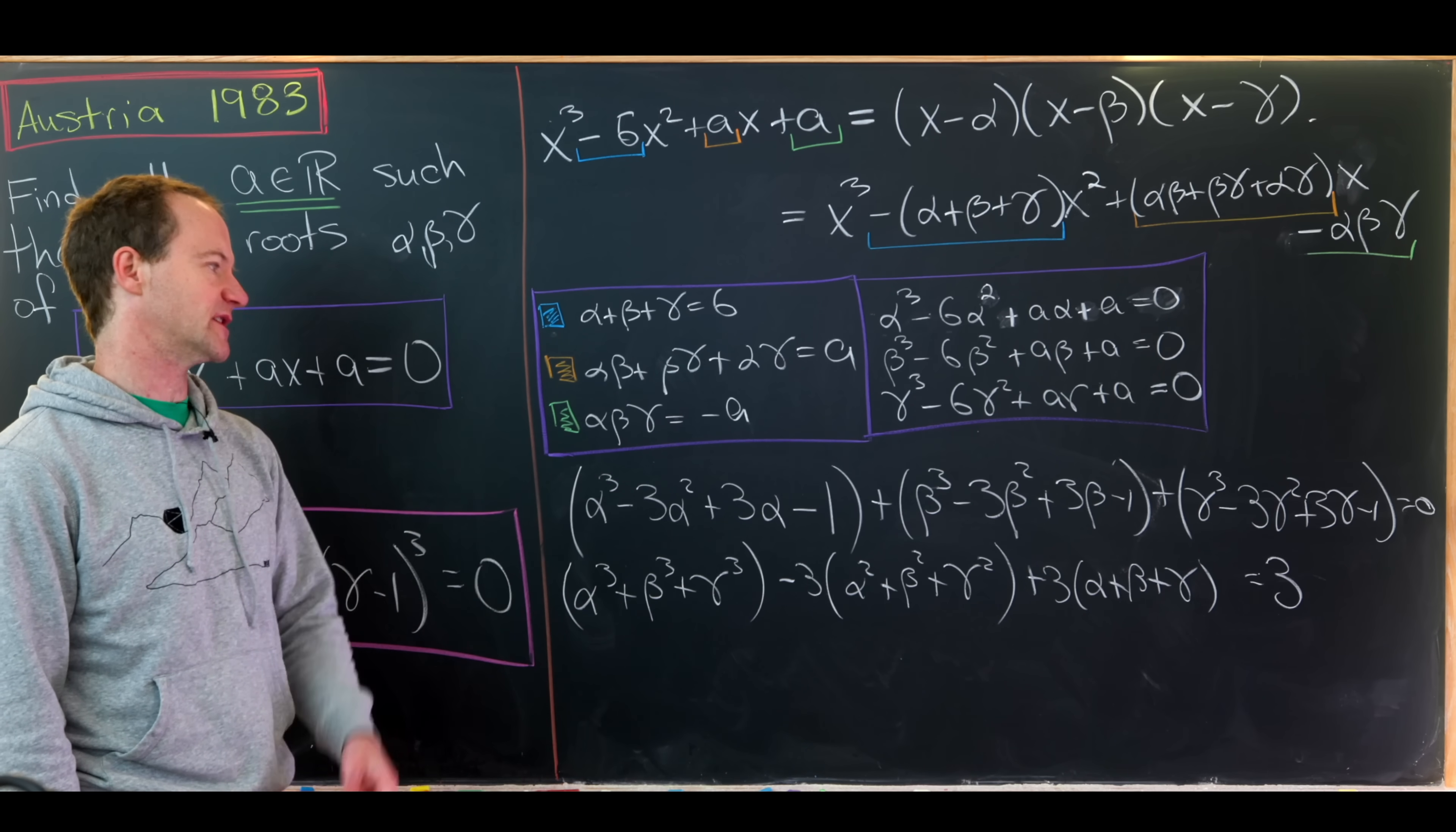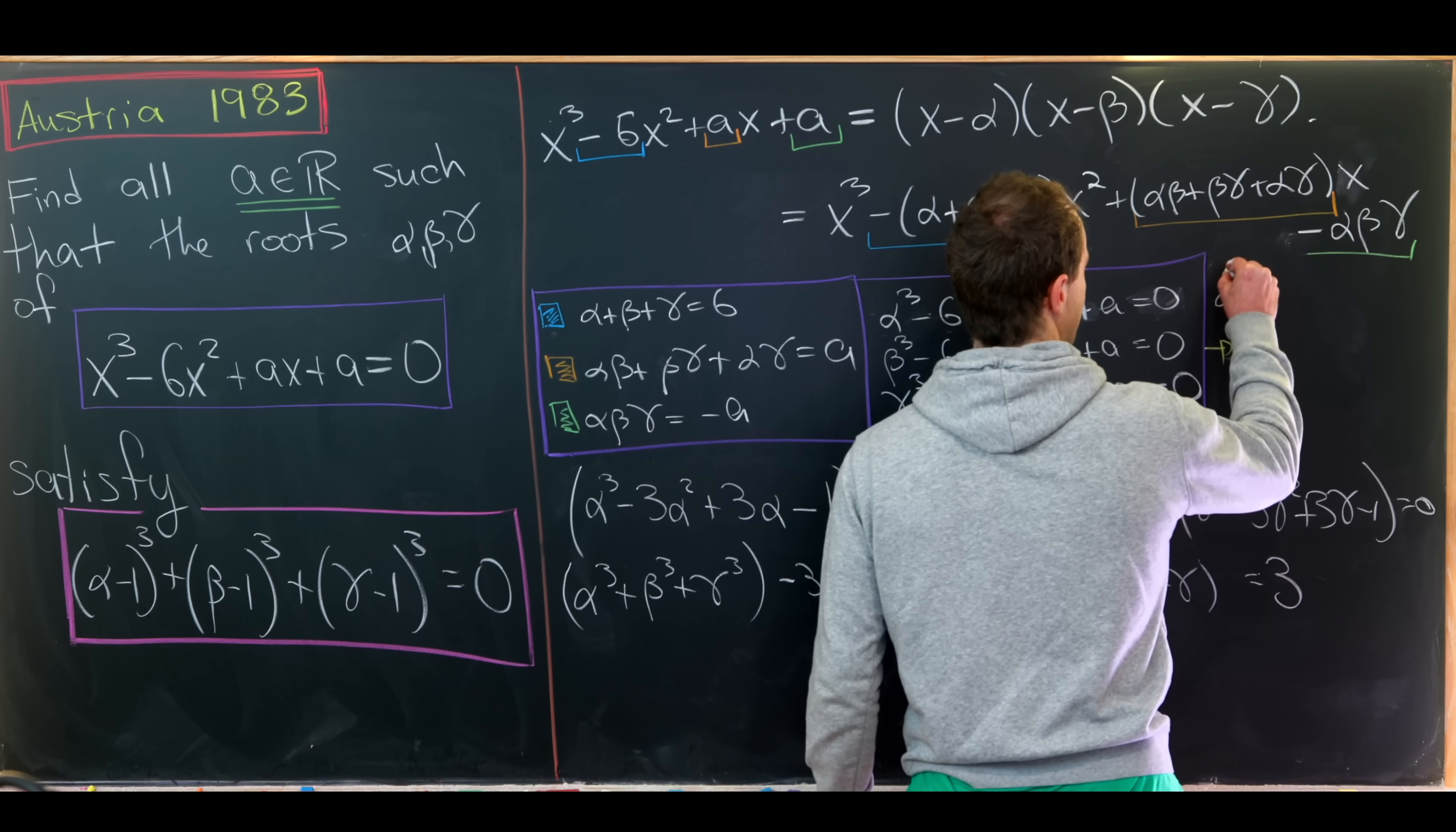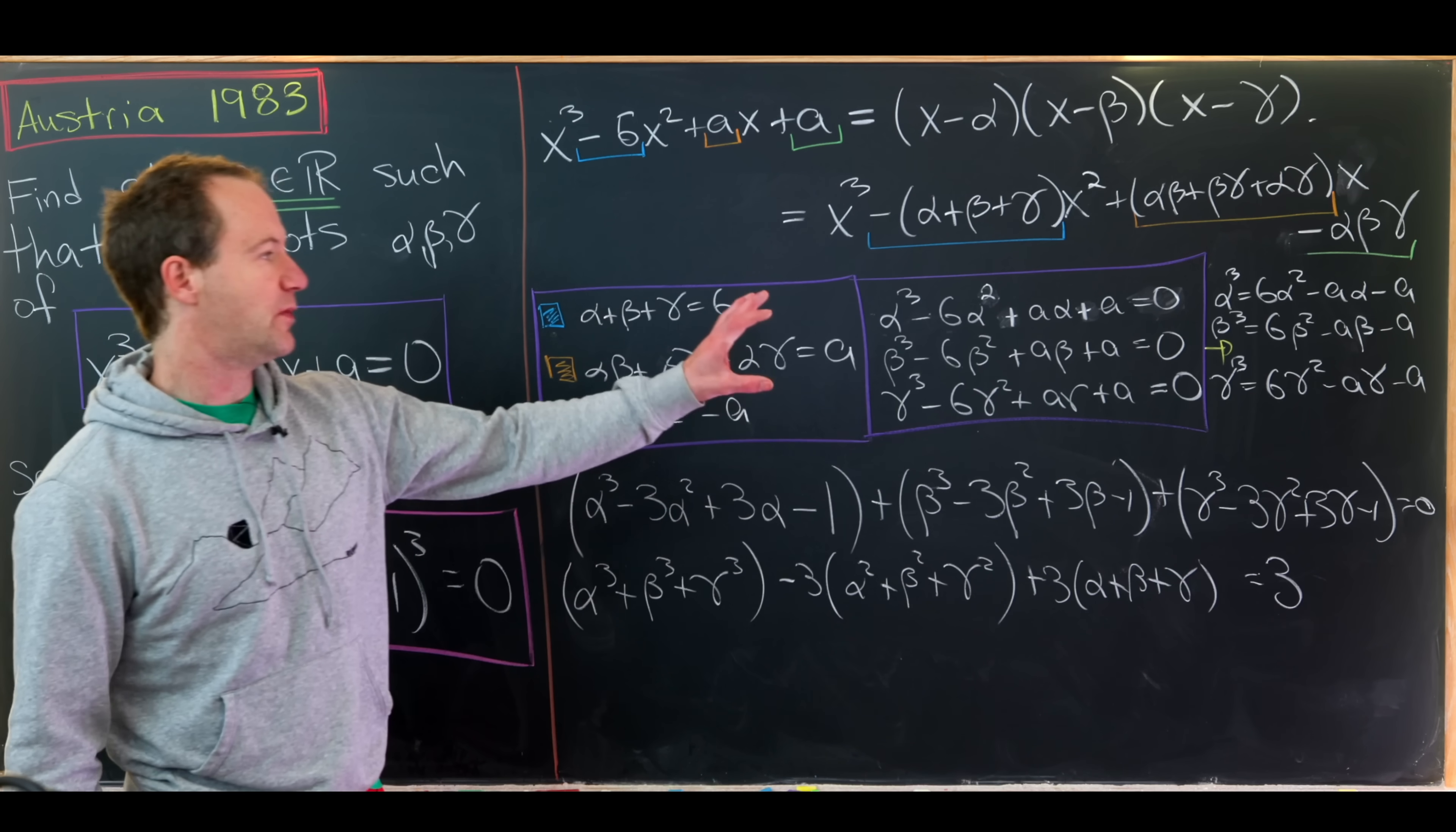Now from here, I'd like to simplify this a little bit. I'd like to get this down from a cubic to a quadratic, and I can do that by taking my second set of equations and solving for alpha cubed, beta cubed, and gamma cubed. So moving all of the squares, linear, and constant terms to the other side of the equation, we'll be left with something like this: alpha cubed equals 6 alpha squared minus a alpha minus a. Similarly, we'll have beta cubed equals 6 beta squared minus a times beta minus a, and same thing for gamma. Gamma cubed is 6 gamma squared minus a times gamma minus a.